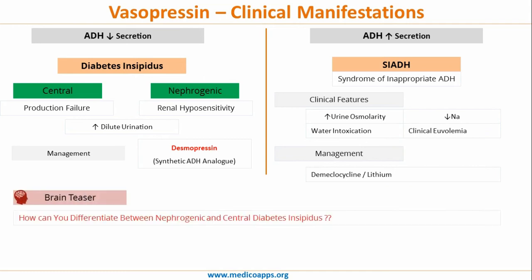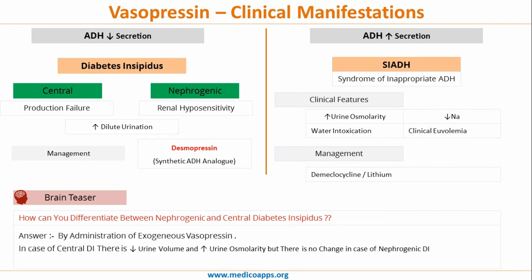The management of SIADH is demeclocycline or lithium. An important clinical question: how do you differentiate between central and nephrogenic diabetes insipidus? The easy way is by administration of exogenous vasopressin. In central DI, because the defect is corrected by the exogenous ADH, there will be a decrease in urine volume and an increase in urine osmolarity. But in nephrogenic DI, the problem is at the receptor level, so even after giving exogenous anti-diuretic hormone, no such change will be seen.